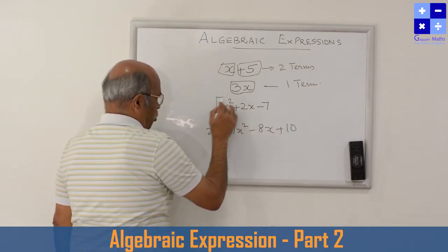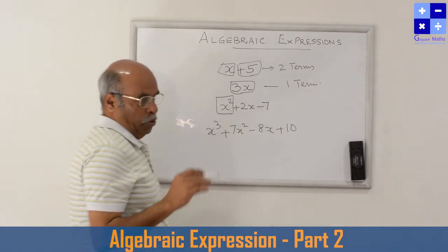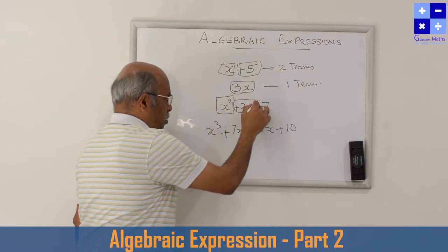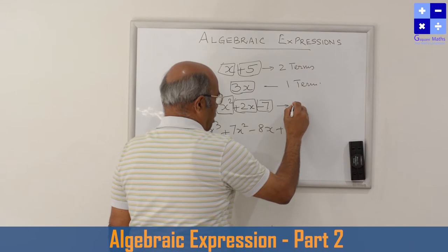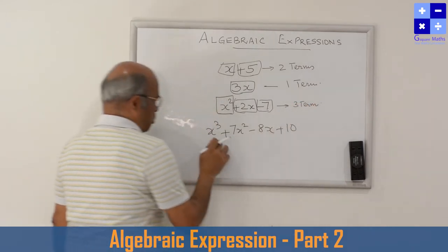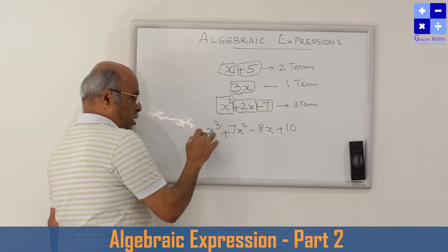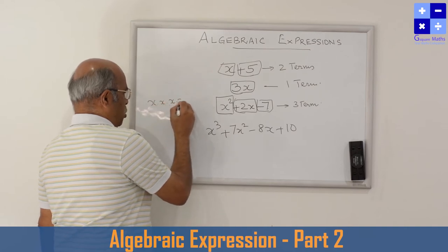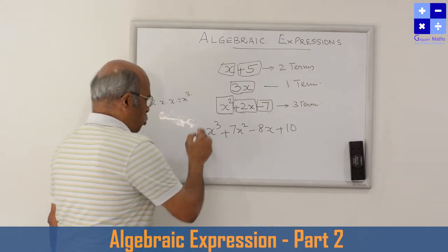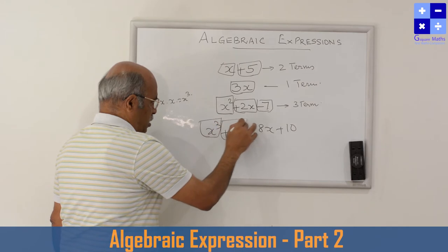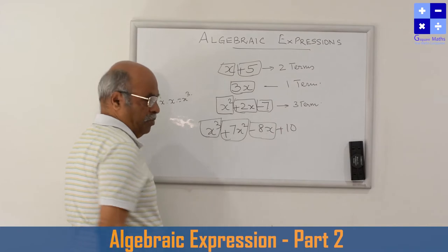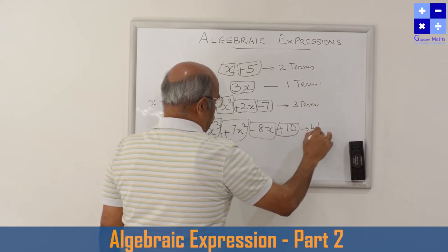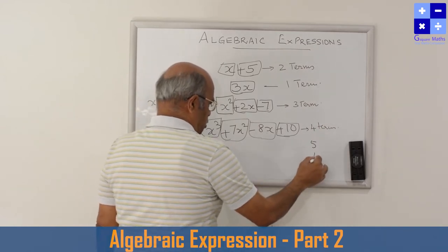x squared means x into x, so that is one term. Plus 2x is another term, minus 7 is another term — so that expression has three terms. For x cubed: x into x into x equals x cubed, x is multiplied three times, so that is one term. Plus 7x squared is another term, minus 8x is another term — the whole minus 8x is one term — plus 10 is another term. So there are four terms.